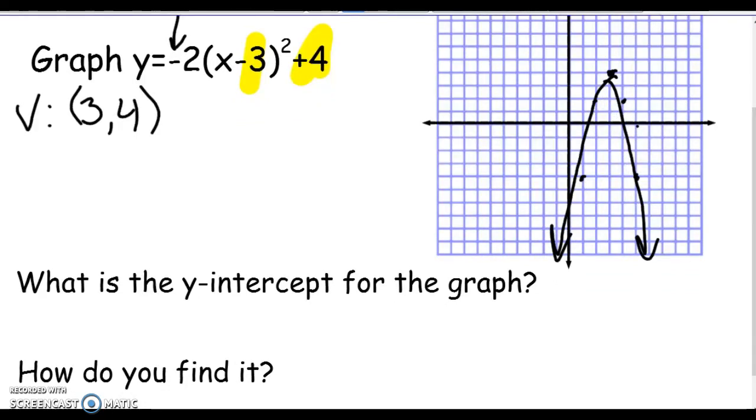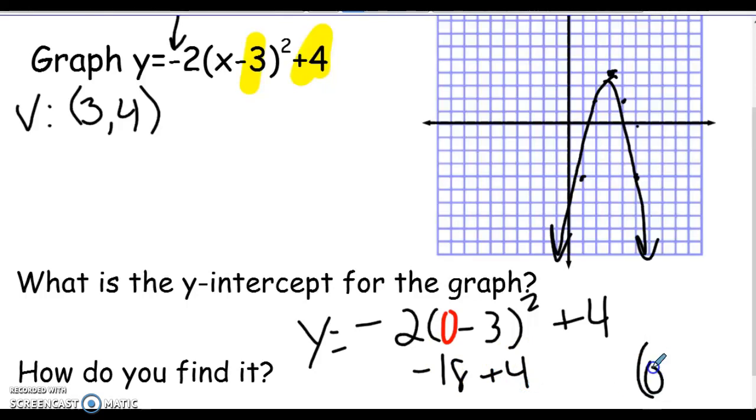So I'm going to take this original equation and just plug 0 into it. So if I have -2 times (0-3) all squared plus 4. So 0 minus 3 is negative 3. Negative 3 squared is positive 9 times negative 2. So negative 18 plus 4. So my y-intercept is at (0, -14). And I can just say my y-intercept is at -14.